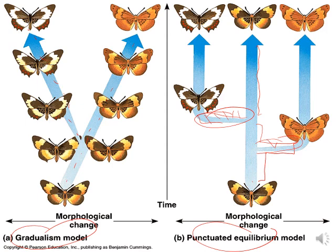Gradualism works very well for explaining the evolution of the entire horse family from an ancestral deer-like species. Punctuated equilibrium works well for explaining how you go from an ancestral wolf species to the many different breeds of dogs. So there's evidence for both models, and which applies tends to depend on which species you're examining.